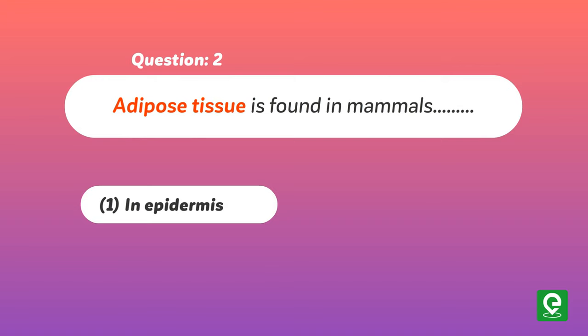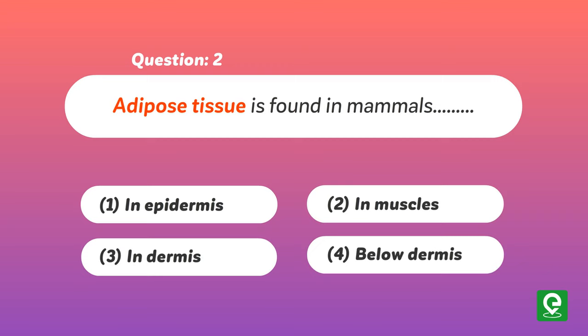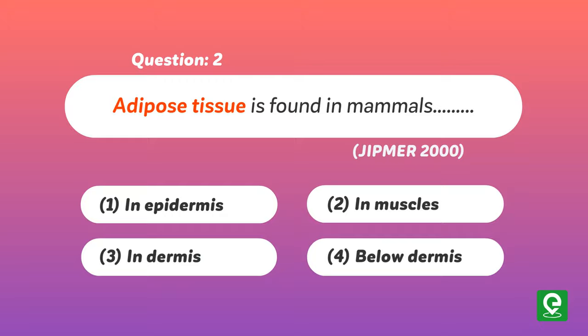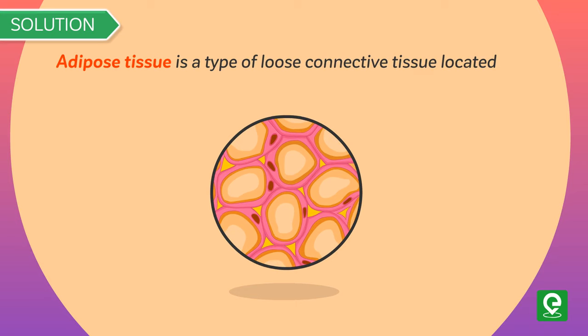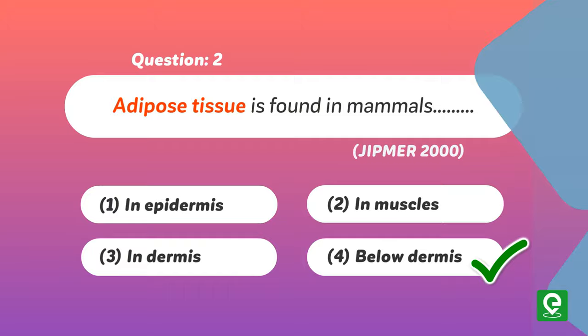Question 2: Adipose tissue is found in mammals — 1) in epidermis, 2) in muscles, 3) in dermis, 4) below dermis. Solution: Adipose tissue is a type of loose connective tissue located mainly beneath the skin (dermis). Hence, option 4 is correct.